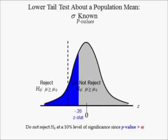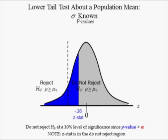When the P-value, the blue area, is larger than alpha, the red area, which you cannot see now, we cannot reject the null hypothesis at a 10% level of significance. Notice that the Z-stat is in the do not reject the null hypothesis region.